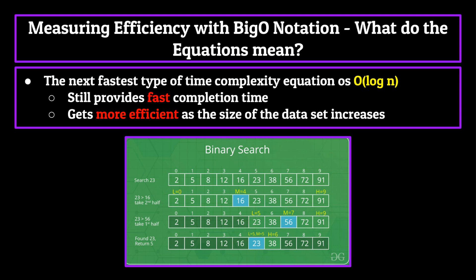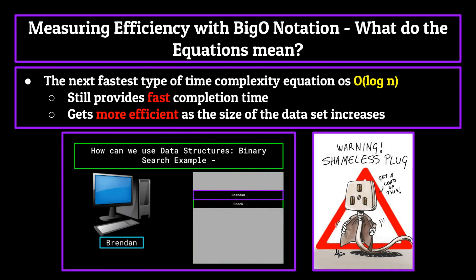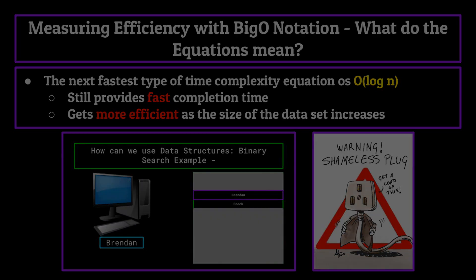A good example of a non-data structures related function which has a time complexity of O log n is the binary search. If you know what a binary search is, you'll understand how when our data set gets larger, the number of instructions needed to find the item you're looking for doesn't increase at the same rate. If you don't know what a binary search is but would like to know in order to better understand O log n, both a card in the top right and a link in the description will take you to the point in our introduction to programming series where you will learn about it.